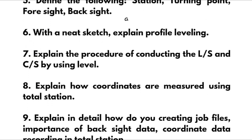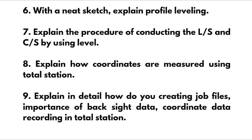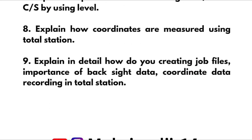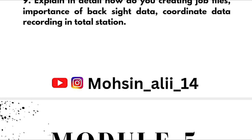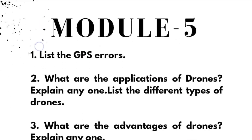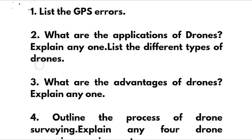More Module 3 questions: Explain the procedure of conducting longitudinal section and cross section using level. Explain how coordinates are measured using total station. Explain in detail how to create job files, the importance of backsight data, coordinate data recording in total station. This completes Module 3, which is also a passing module.